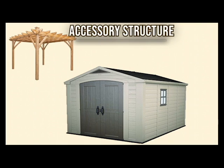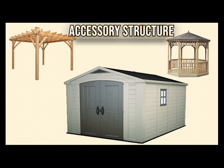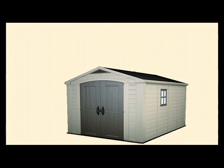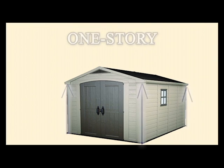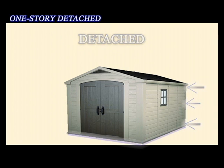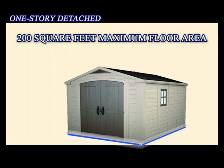Other structures such as arbors and pergolas can fall under the definition and exemption, but check with your local building department before construction. Specifically, the code exempts accessory structures that are one-story, detached, and less than 200 square feet in floor area.